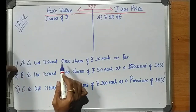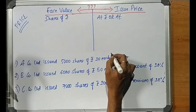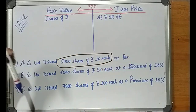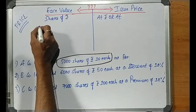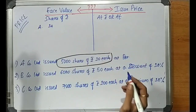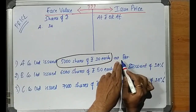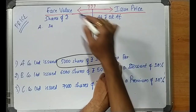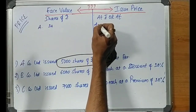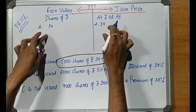Example: A Company Limited issued 5000 shares of rupees 10 each. Breaking the sentence here — '10 each' is our face value, so in this case the face value is 10. Next sentence: 'These shares are issued at par.' At par means face value and issue price are equal.